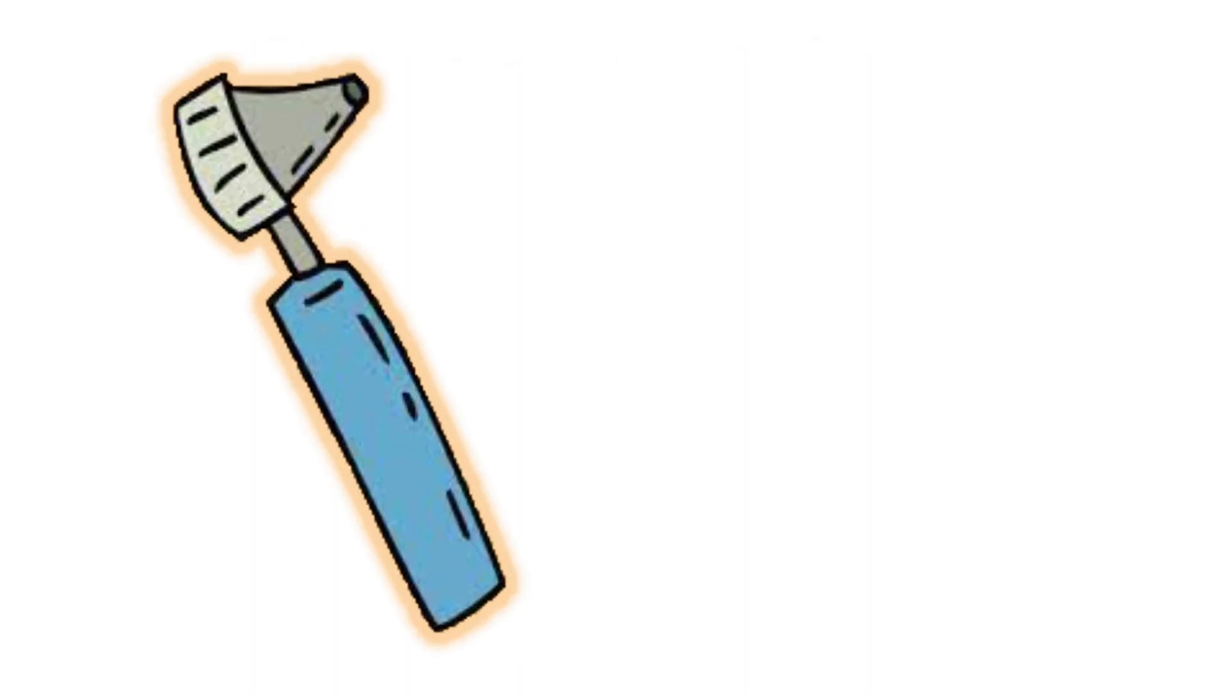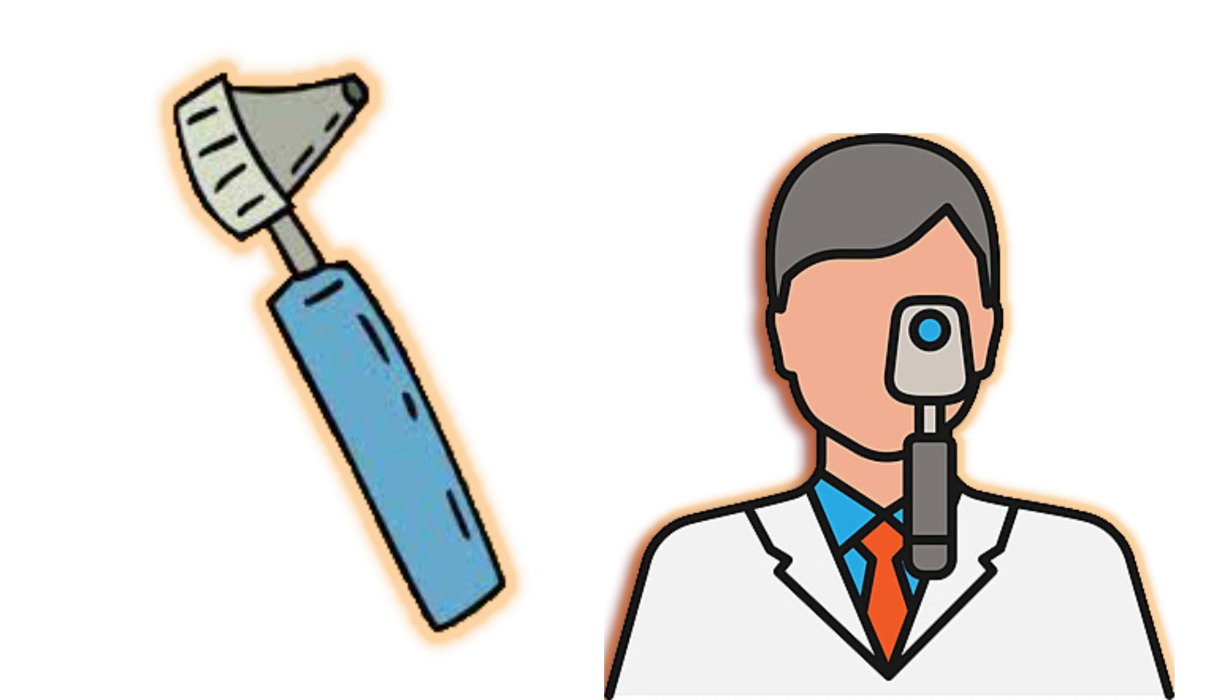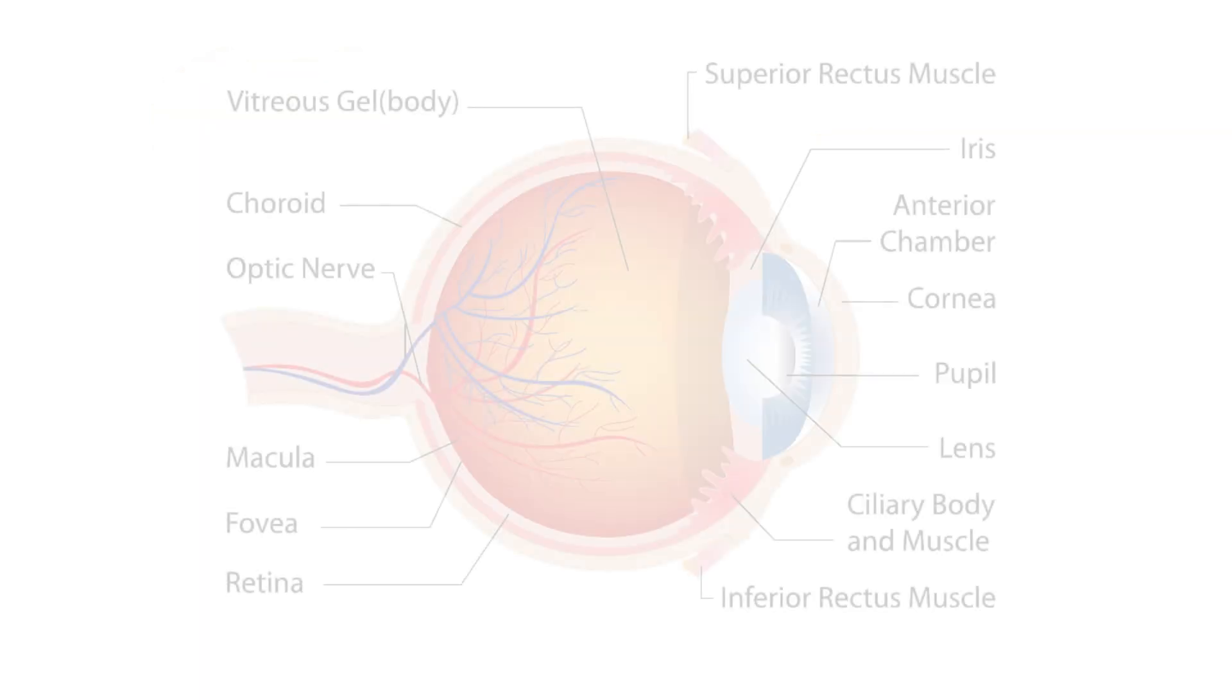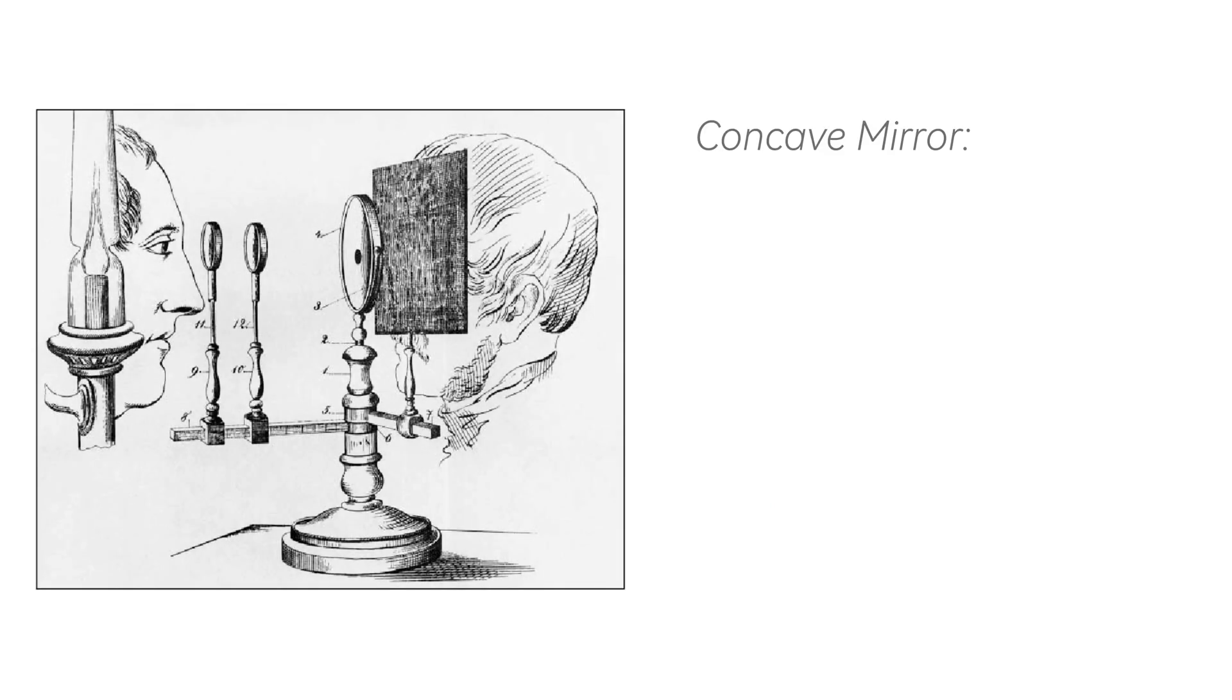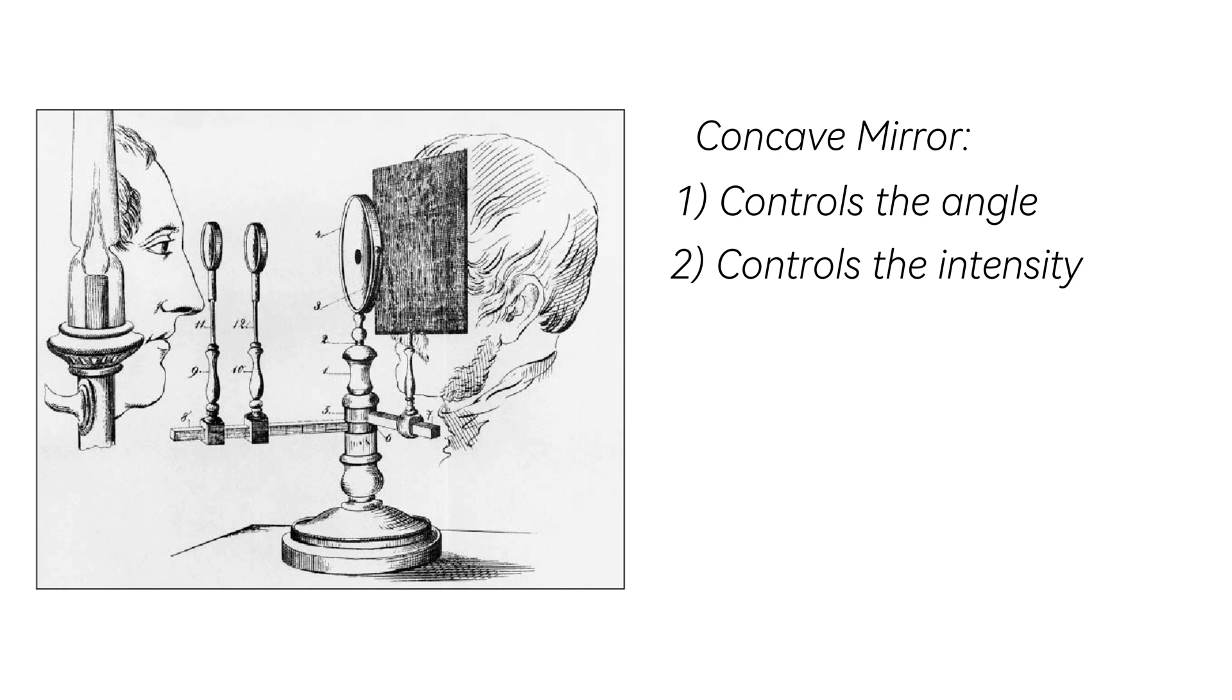Ophthalmoscopes are major tools used by doctors to examine the interior structures of the eye, such as the retina, optic nerve, and blood vessels. It is basically just a concave mirror. The concave mirror controls the angle and intensity of the light beam. This control is essential for achieving optimal visualization without causing discomfort to the patient.